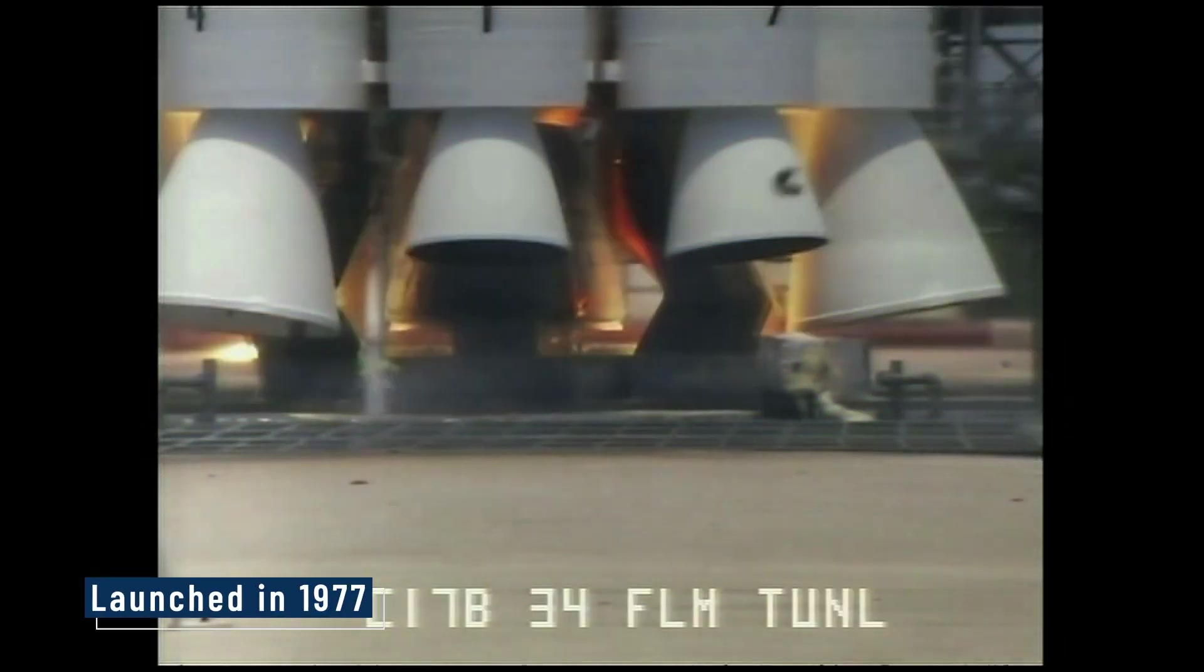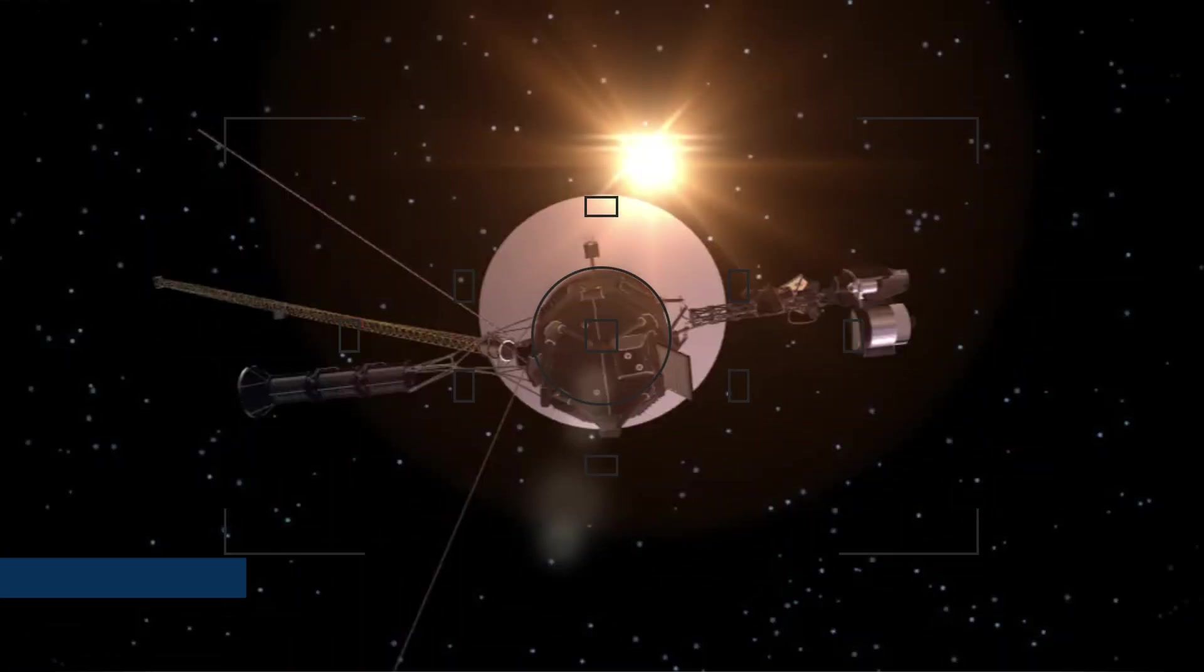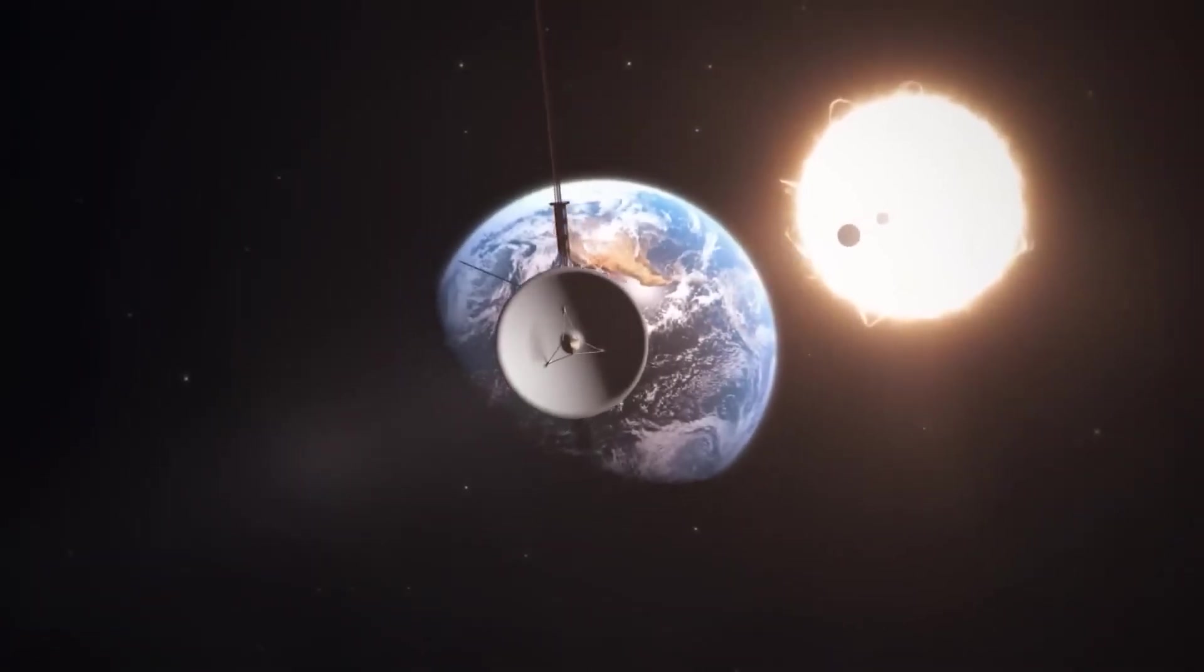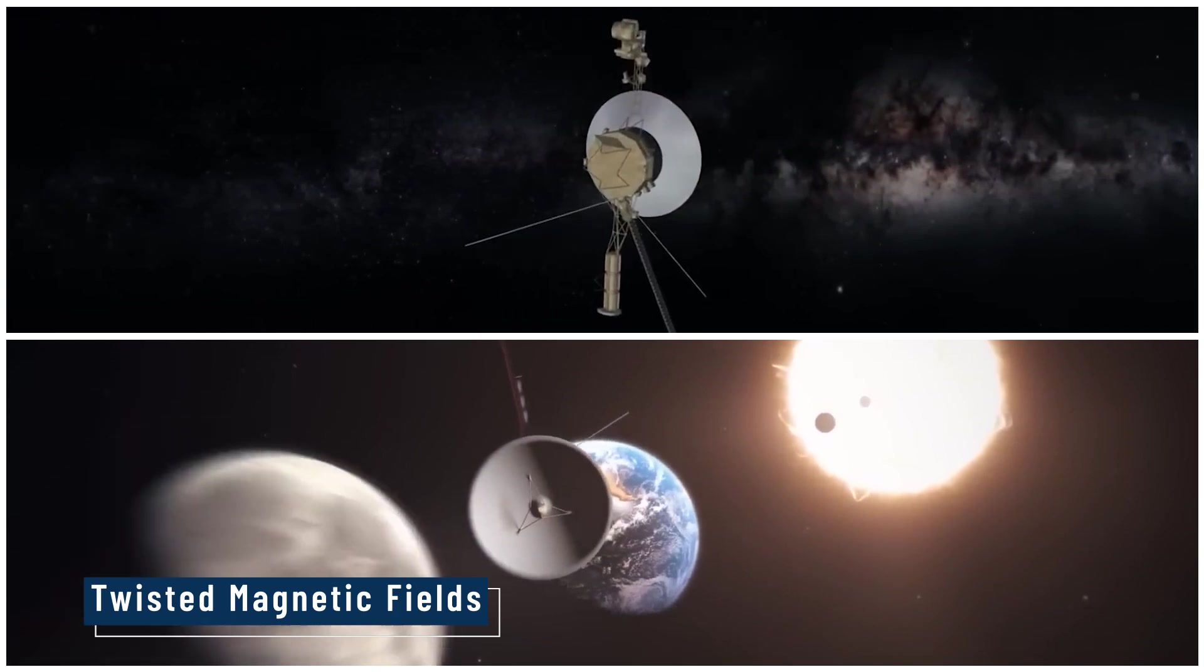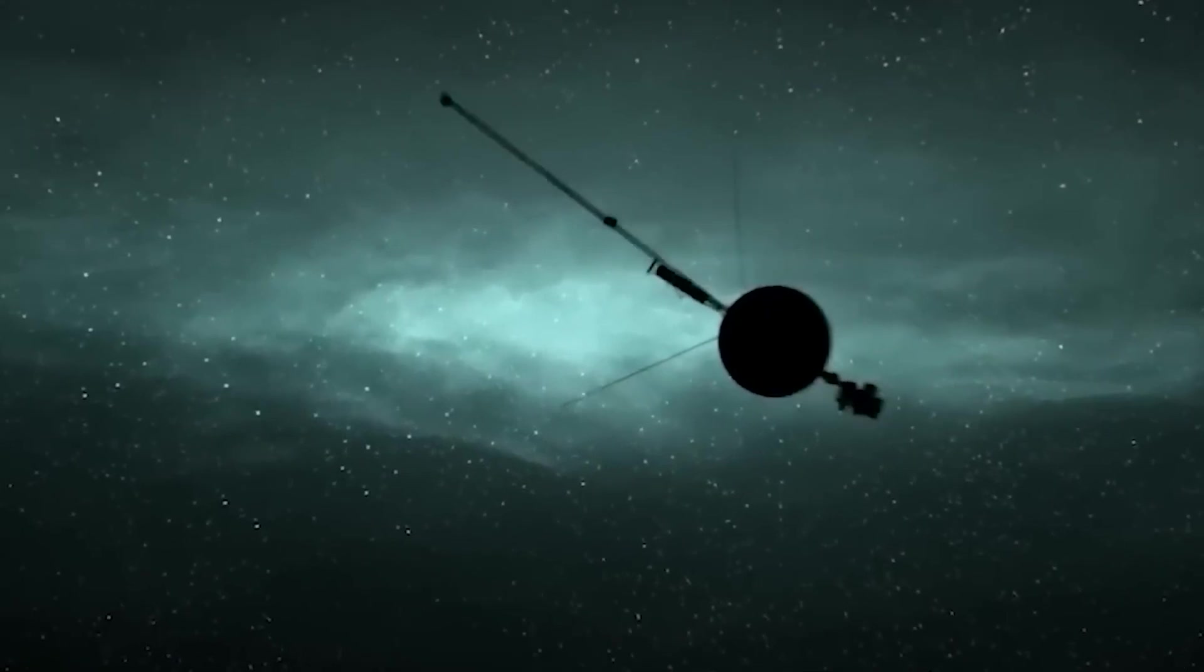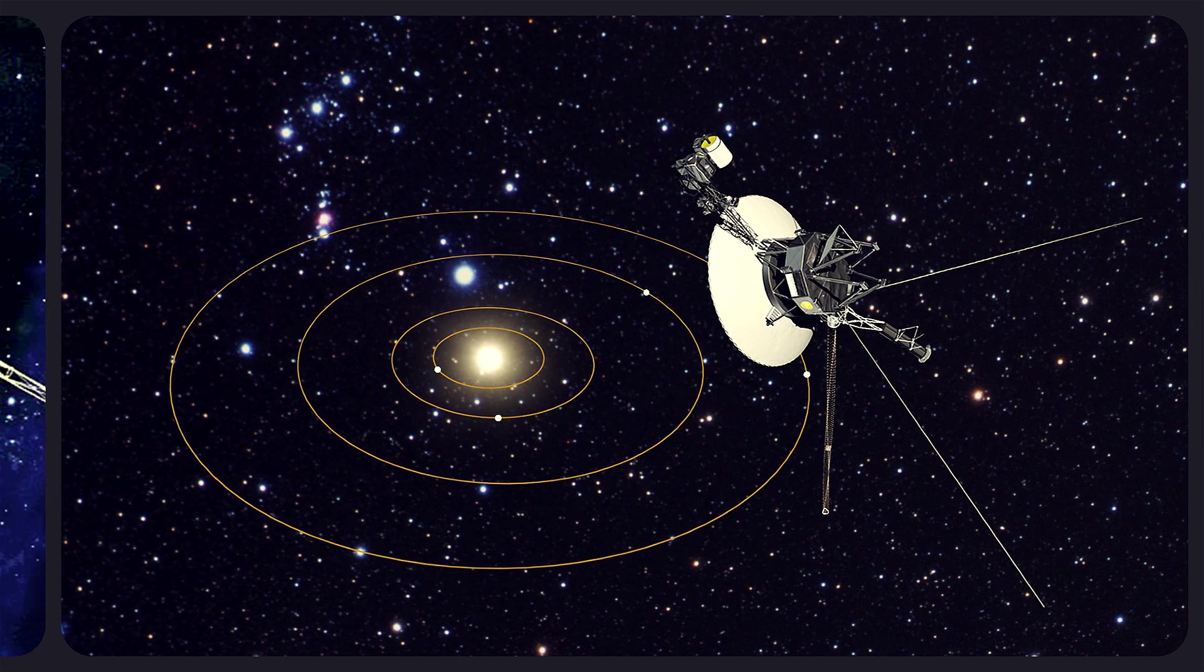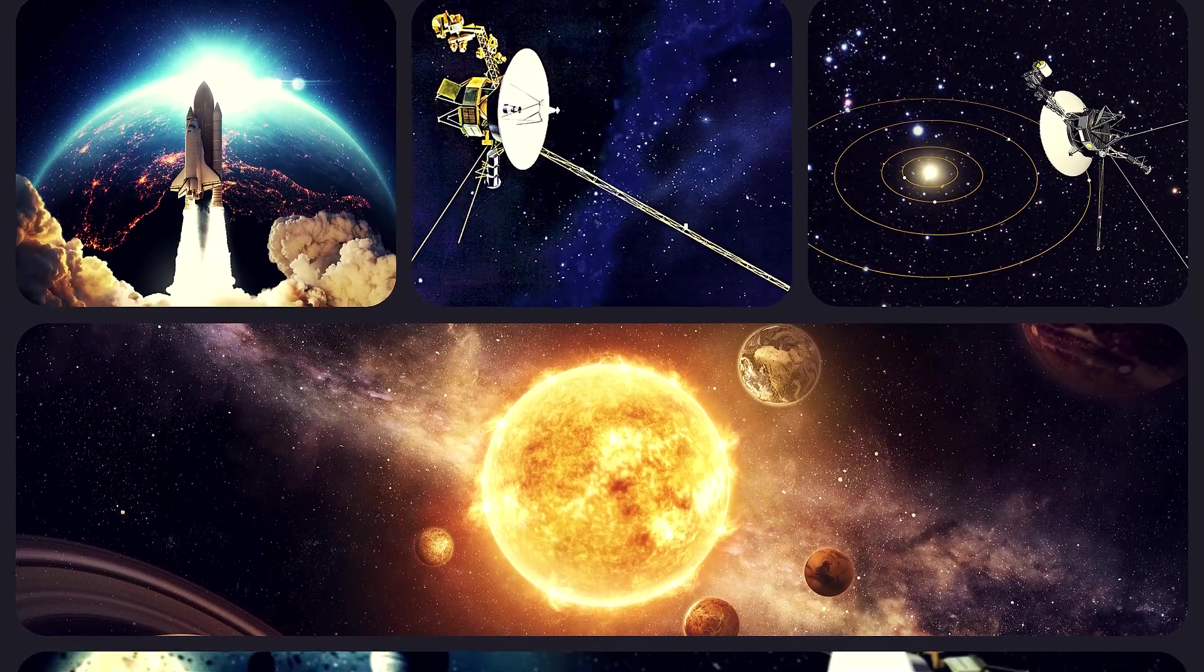Voyager 1 was launched in 1977 with a simple goal: explore the outer planets. But now, 45 years later, it's made a discovery so eerie, so baffling, that it has scientists like Bill Nye sounding the alarm. Floating alone in interstellar space beyond the Sun's protective shield, Voyager is hearing a strange hum, detecting twisted magnetic fields, and sending back data that makes no sense. Something out there is not just unknown, it's actively weird. What is the spacecraft encountering? Why is it acting strangely? And what does it mean for humanity's future in space? The answers are deeply unsettling.